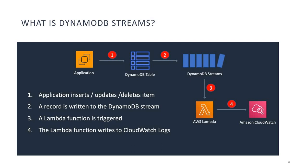What is DynamoDB Streams? DynamoDB Streams is a feature of DynamoDB that provides a time-ordered sequence of item-level modifications made to a table. It enables real-time data processing and analysis by allowing developers to capture and react to changes in the table.